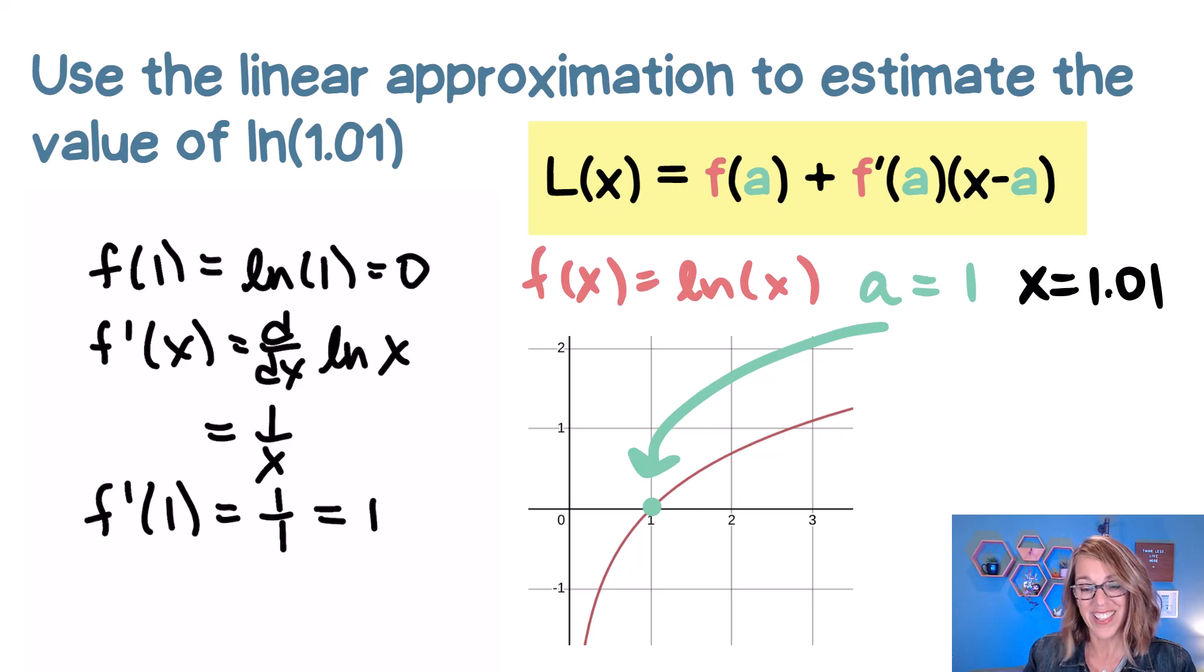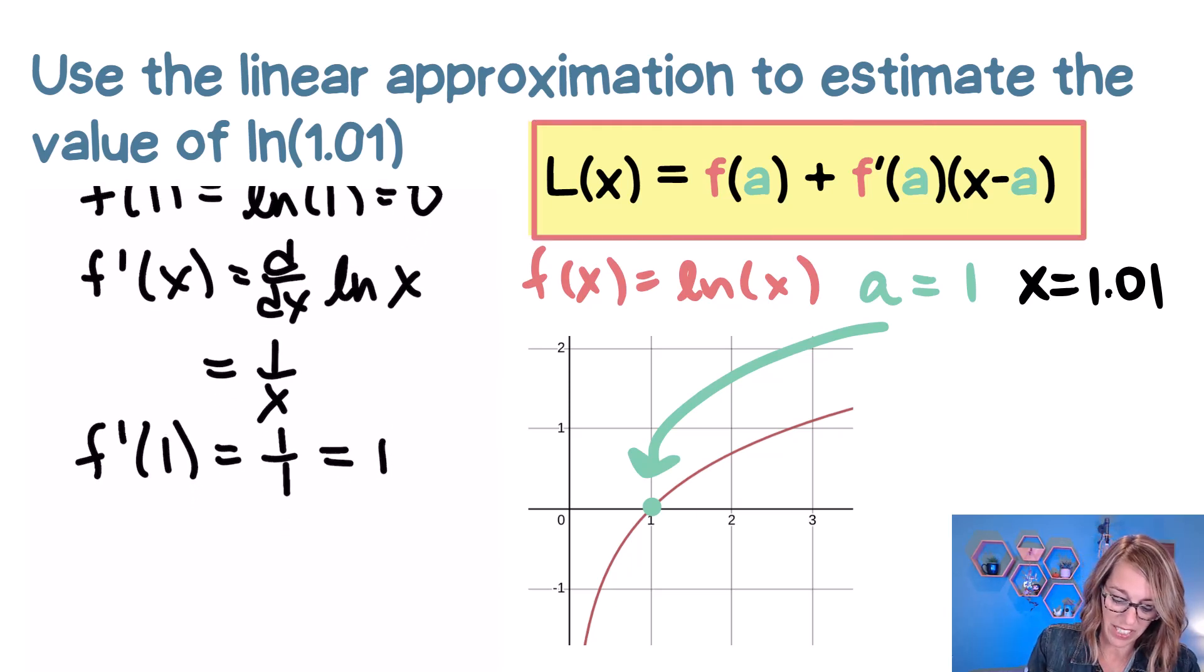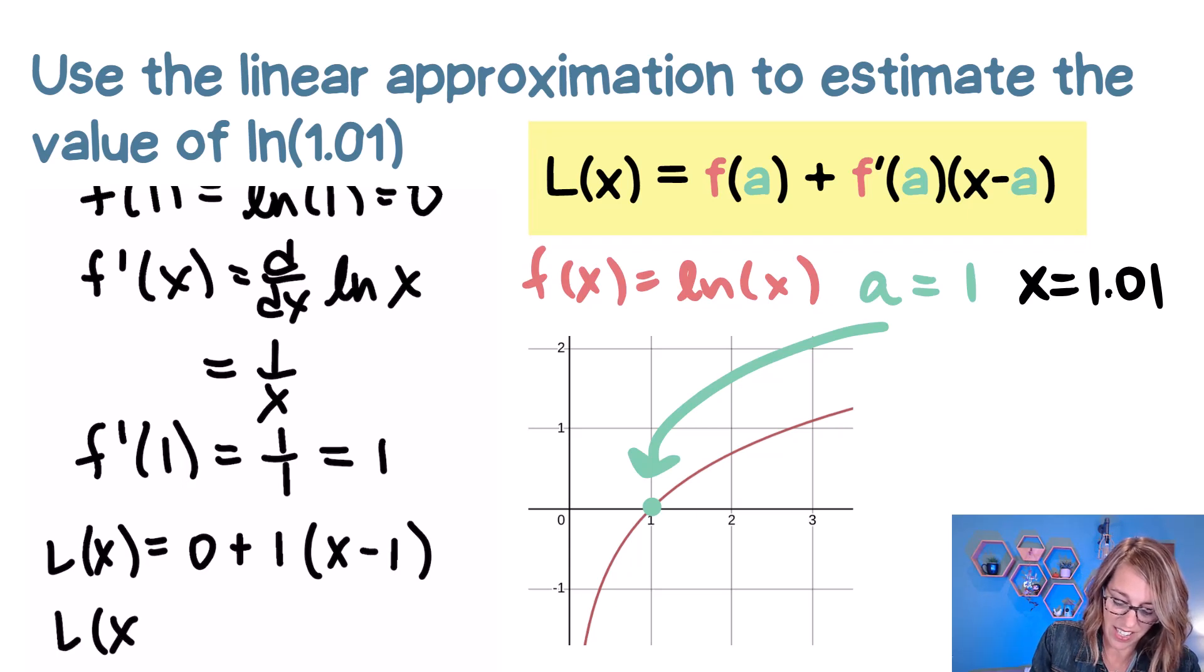Now I'm ready to put everything into my linearization formula. So my linearization, L of X, is equal to F of A, which is equal to 0, plus F prime of A, which is 1, and then X minus A. So L of X is equal to, super nice function here, X minus 1.